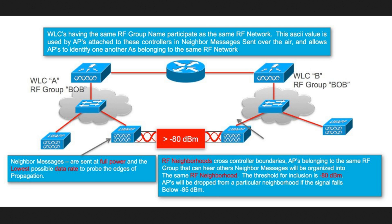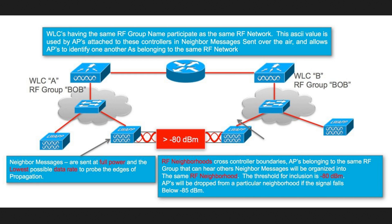The NDP packets are sent at full power regardless of the configured power level — so even if clients are served at power level 4, NDP packets go out at maximum power. All access points receive neighboring NDP packets from each other. However, whenever an NDP packet arrives with a signal strength below minus 85 dBm, it will be dropped by the AP. That is how this RF group functionality works in the background.